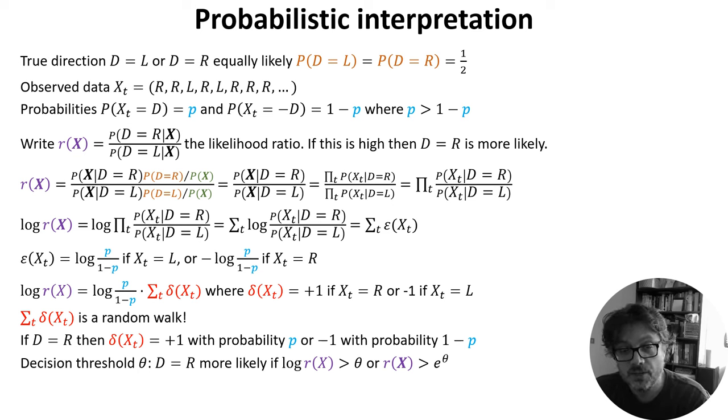We can understand the decision threshold in terms of probability now. We wait until the log likelihood ratio is bigger than some threshold theta, or equivalently that the likelihood ratio is bigger than e to the theta. And this happens when the sum of the deltas is bigger than some threshold, precisely as in the drift diffusion model.